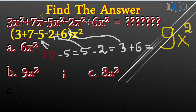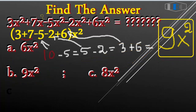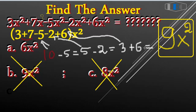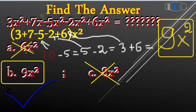So the only correct answer is B, which is 9x². Answer A and C are different from 9, so they are wrong. The correct answer is only B — 9x². That's the detail solution.